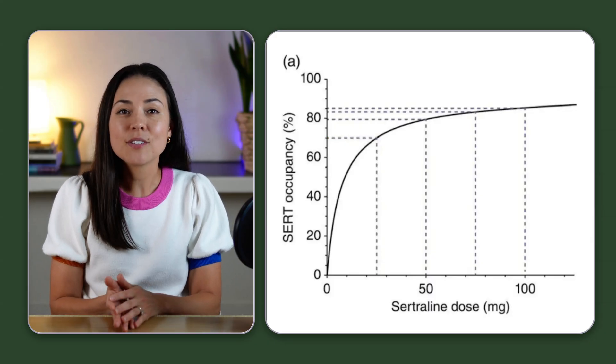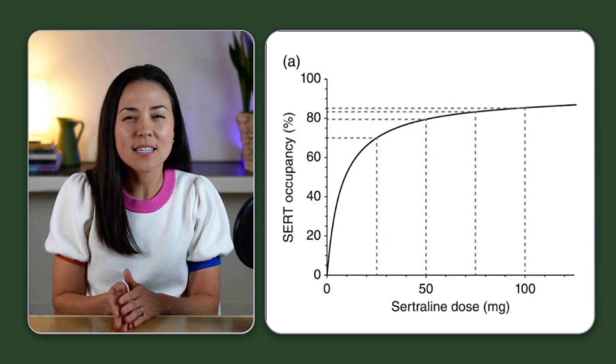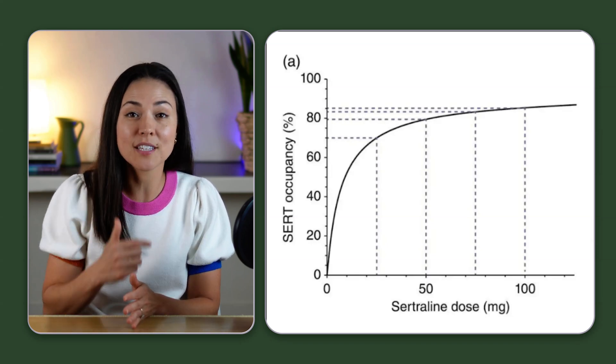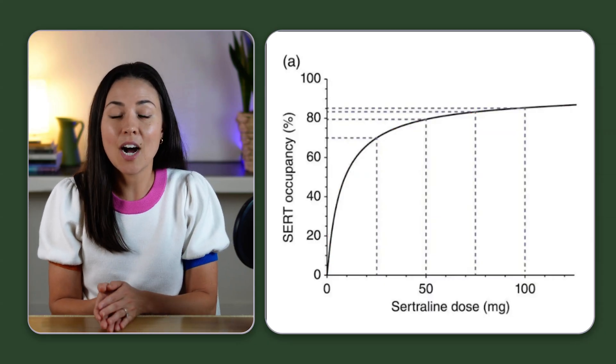And doubling the dose doesn't double the effect. It only blocks it a little bit more. So as we go up to higher doses, the effect is only marginally greater. And that's why we see the curve flattening out.